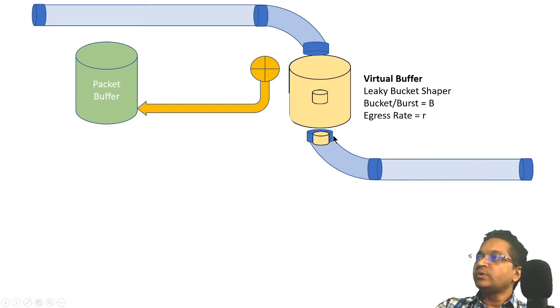The egress rate is R here and it continues to drain, whereas the rate here is determined by this shaper. It only drains when there is space in this virtual buffer, which we call the leaky bucket shaper. Once it's filled up, the only thing that happens is you keep draining this leaky bucket.